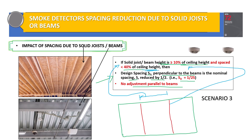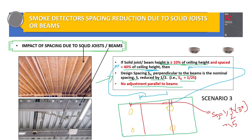I will explain Scenario 3 with an example. The distance between smoke detectors perpendicular to the beam equals half S — since S is 30 feet as per NFPA 72, SD equals 15 feet in that direction. Parallel to the beam or joist, SD equals S, which is 30 feet. This is how we distribute the smoke detectors across the entire floor or building.